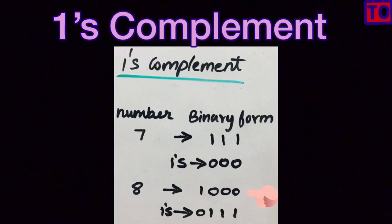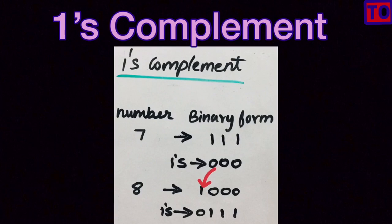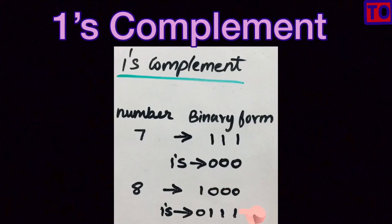Now for 8: the actual binary of 8 is 1000. The first number is 1, and the remaining three bits are 0. So the One's Complement of 8 flips all bits. The result is the One's Complement of 8.